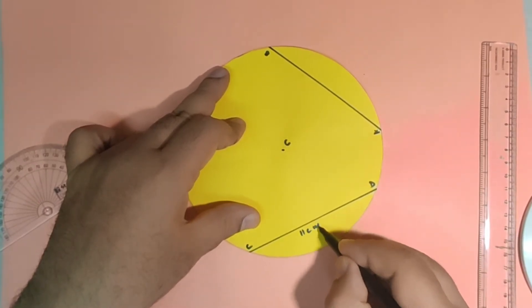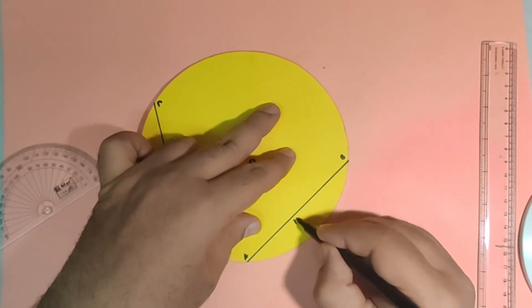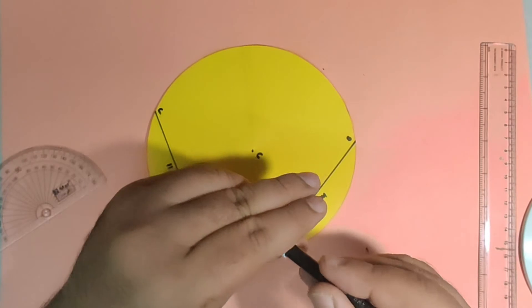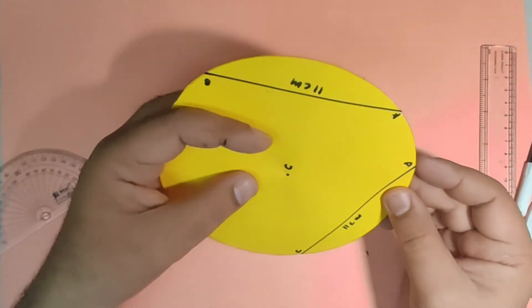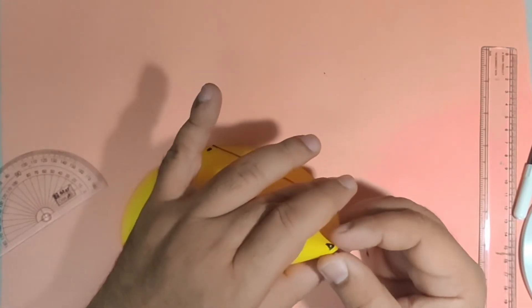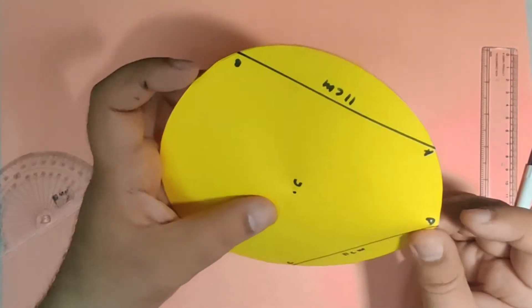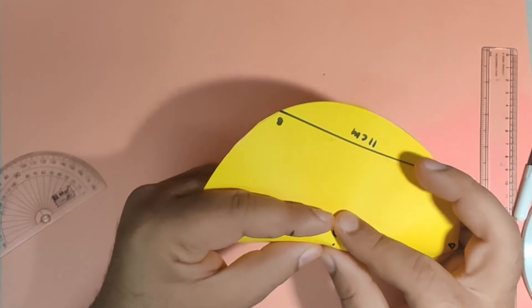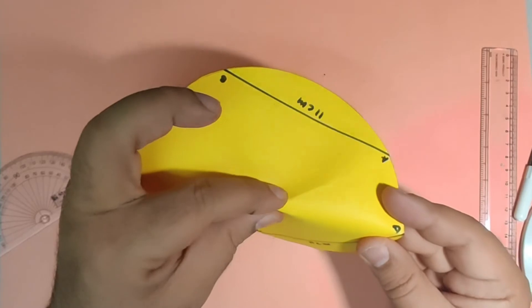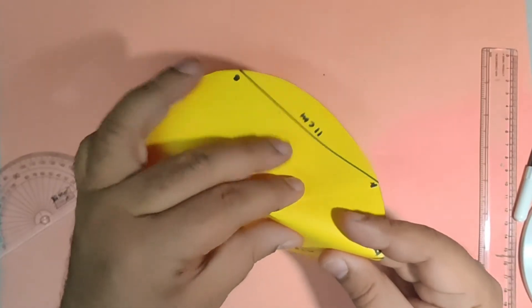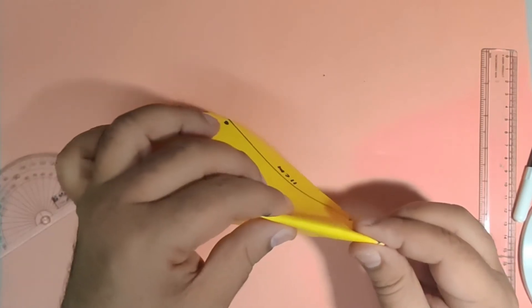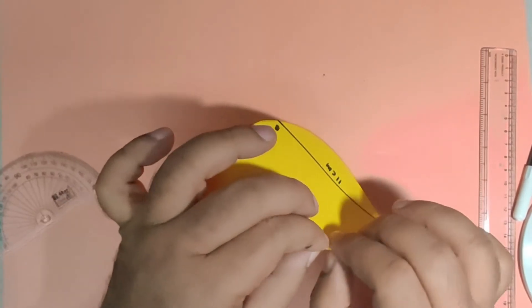This is also 11 centimeter length chord. So I'll make a small crease over here then at the center in the direction of this D point and then slowly and gradually gently I'll make a crease over here.